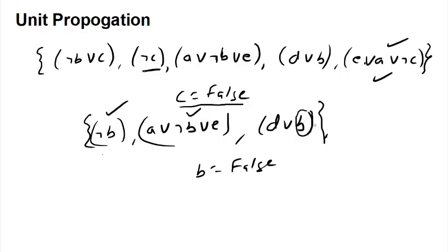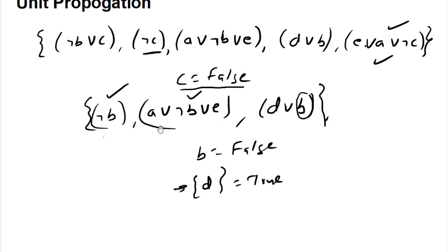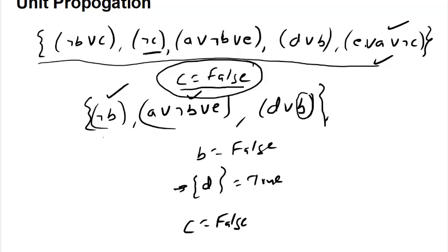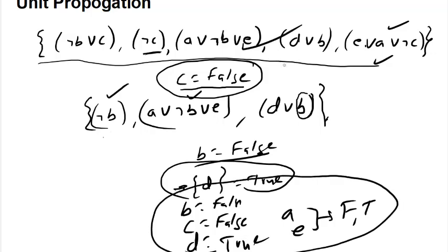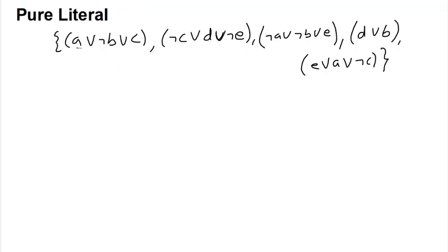Now unit propagation: if we have a single-literal clause such as just C, we must set C to false to satisfy it (if the clause contains negation of C). Then negation of C becomes true. We then propagate: setting B to false satisfies the next clause, and we are left with only D which must be set to true. With five variables we solved satisfiability in just a few steps without a full truth table.